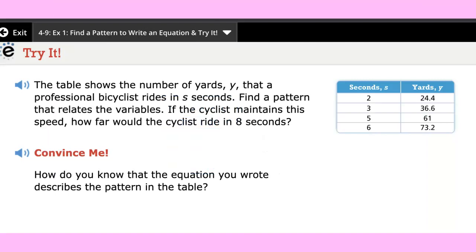At this time we want to work on our own problem. We're going to try this one: the table shows the number of yards y that a professional bicyclist rides in s seconds. Find a pattern that relates the variables. If the cyclist maintains the speed, how far would the cyclist ride in eight seconds?